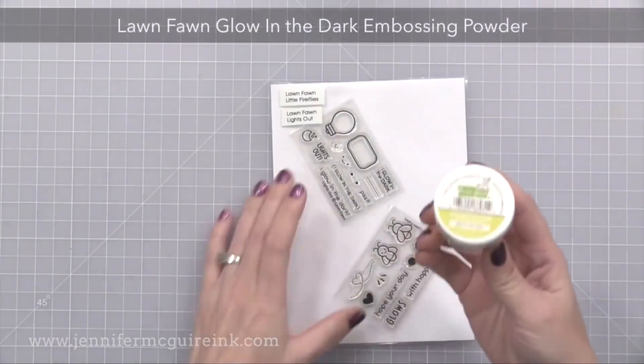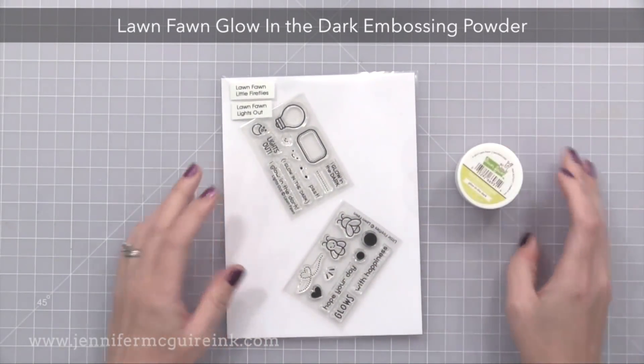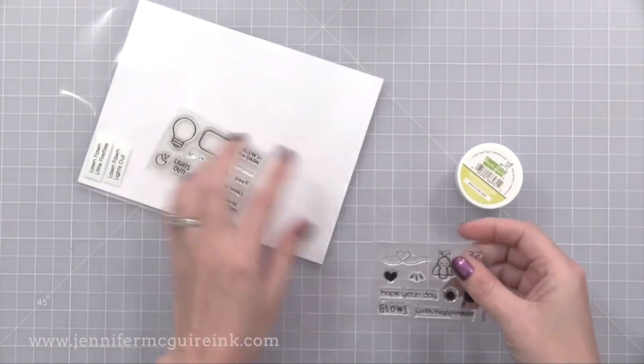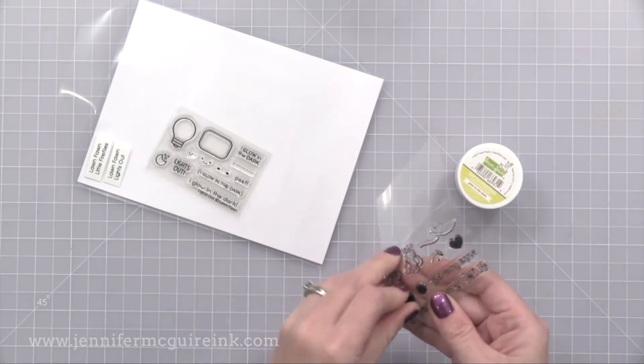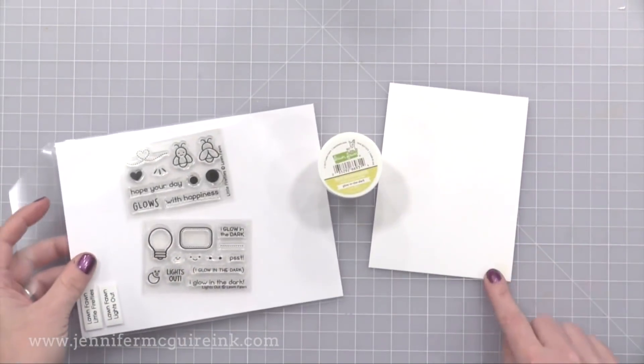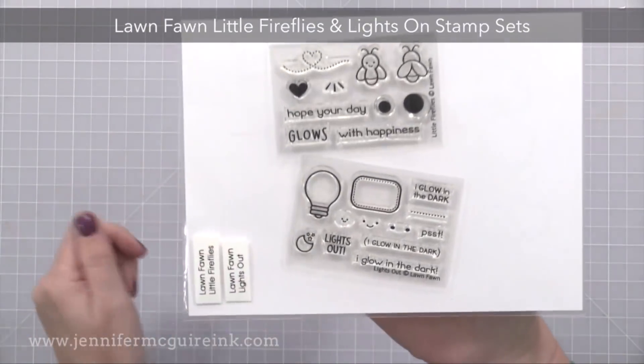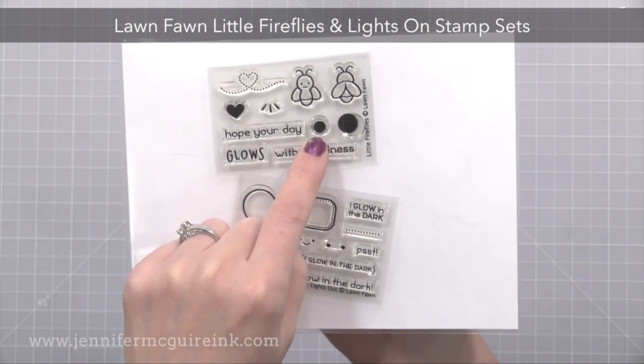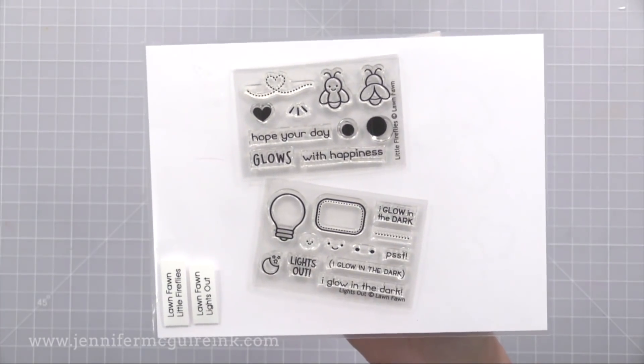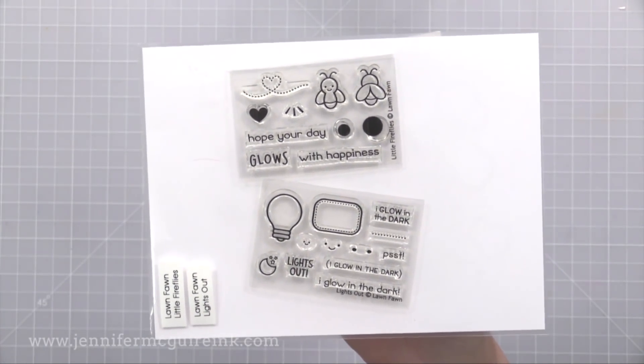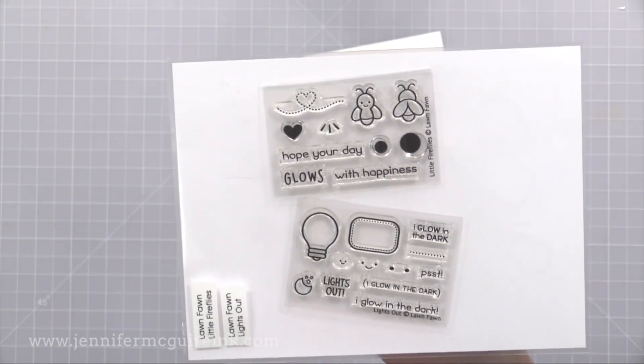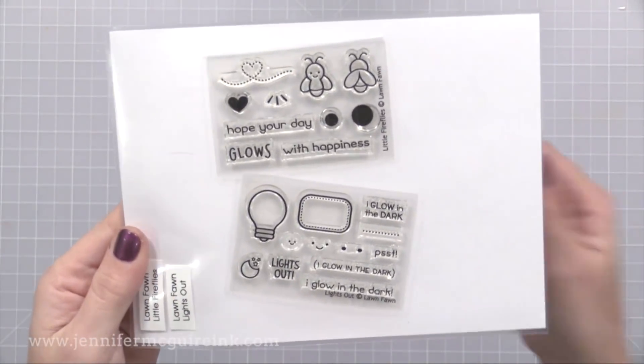Before we go I wanted to mention a few more products that Lawn Fawn came out with at the Creativation craft show that I was really excited about. So I wanted to share here. One thing they came out with is the Lawn Fawn Glow in the Dark Embossing Powder. Now when you heat emboss this powder it's almost white. It has a little yellow tint to it but not much. But it actually does glow in the dark which is really fun. Then they have these two small stamp sets. The Little Fireflies and the Lights On stamp set. So you can make the Little Firefly glow or the light bulb glow. And there are sentiments that mention I glow in the dark so people will know to check it out. I was going to use the glow in the dark embossing powder on that alien card that I was showing you earlier. And I like how these all can be used together.